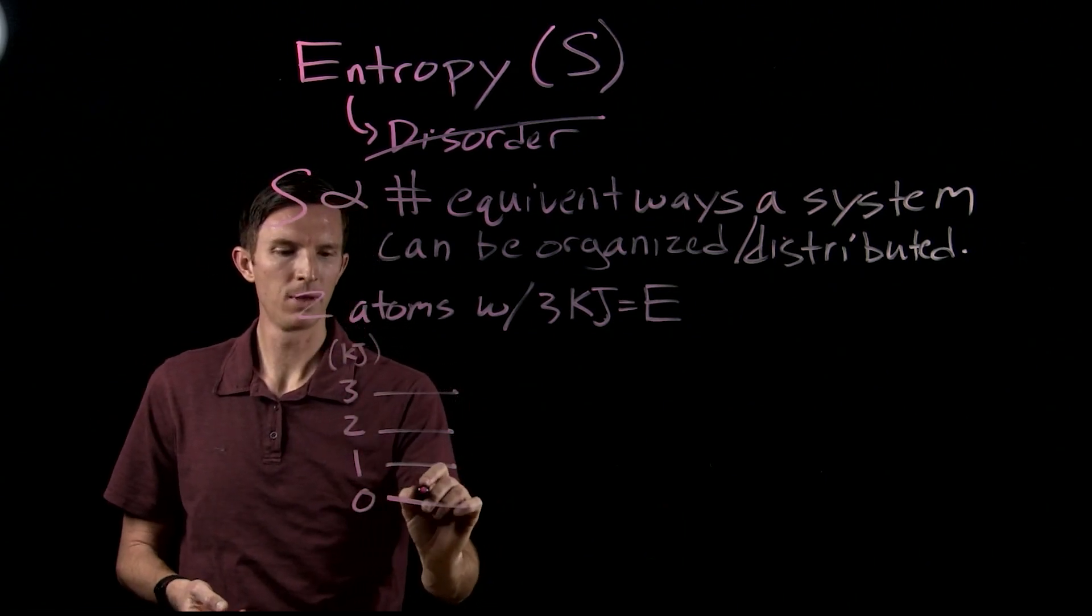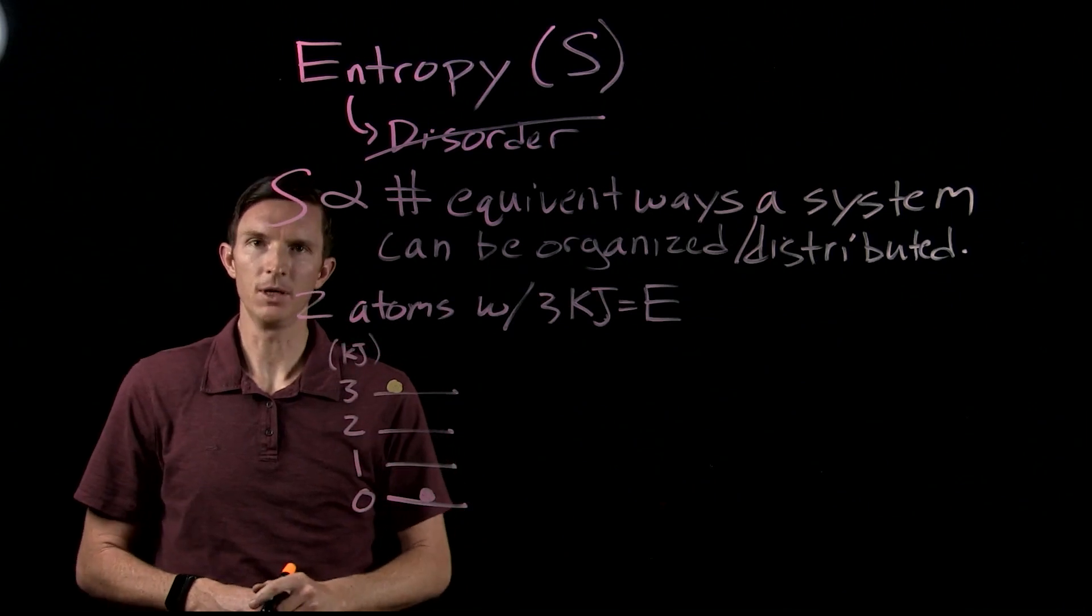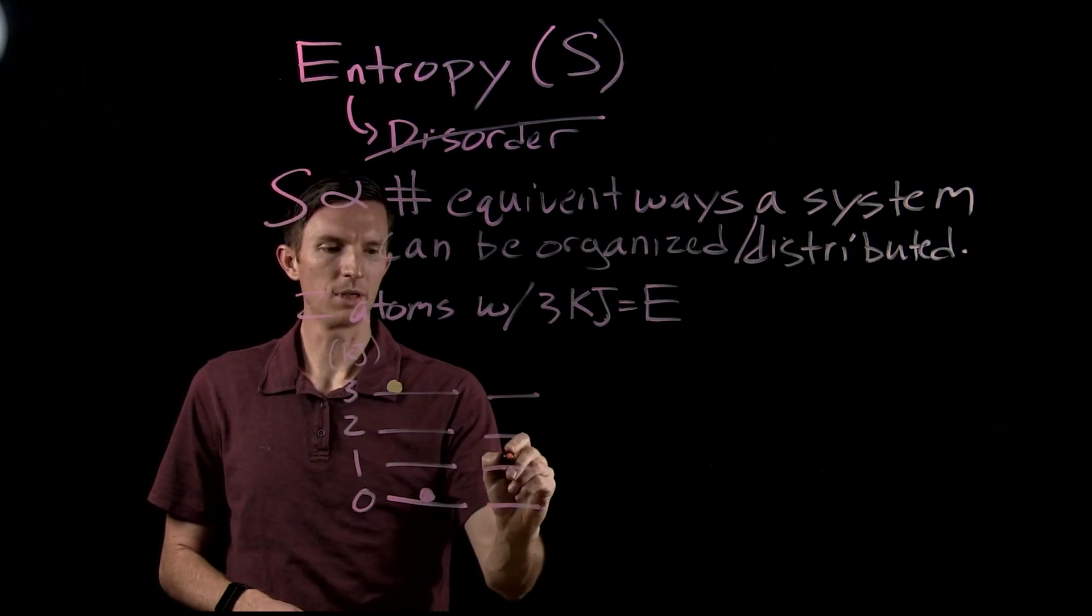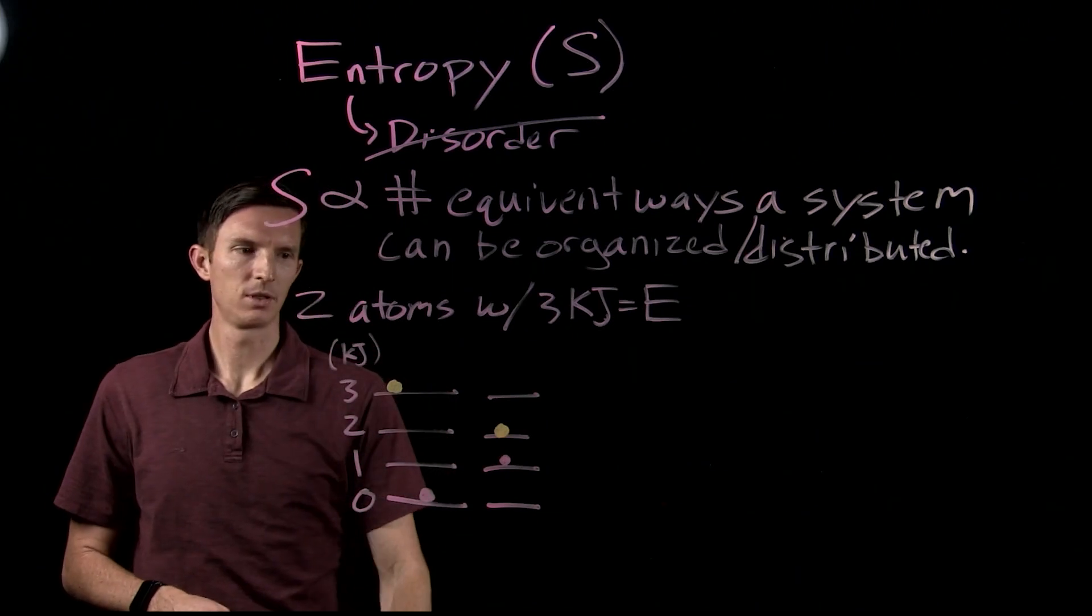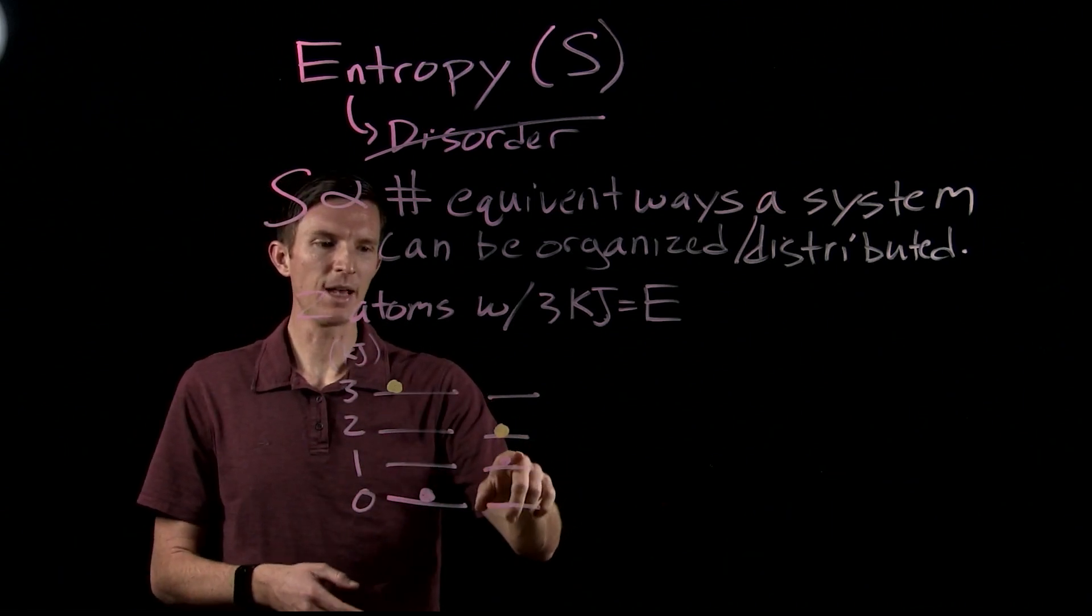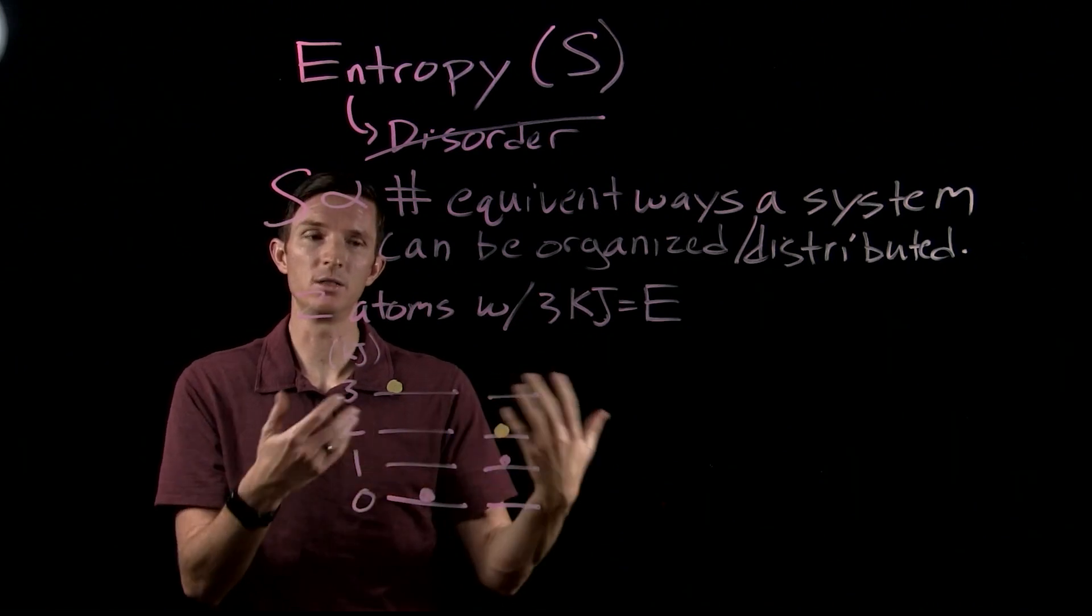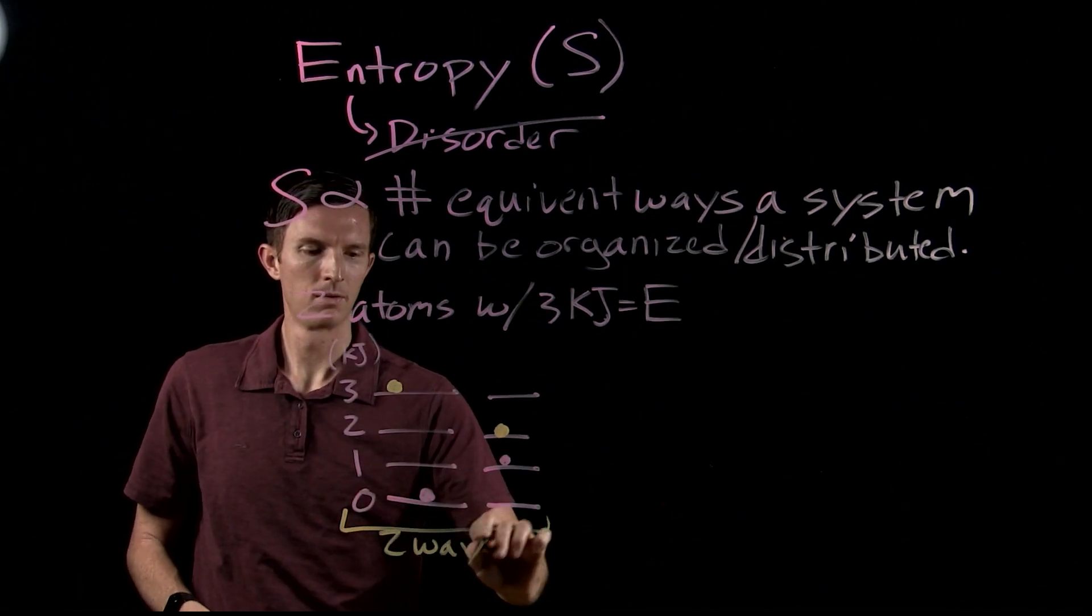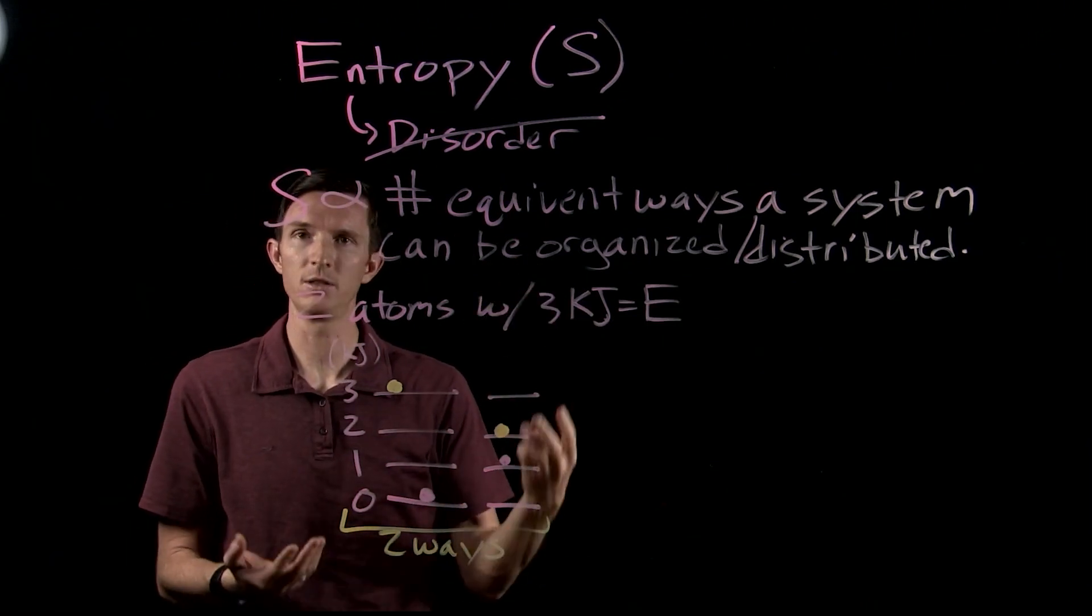We have the possibility to have one atom sit at zero kilojoules and the other at three. We can also have one at two and one at one. These are the only two ways we can distribute them. If this atom's up here and this atom's down here, it's still equivalent. We haven't changed how energy is distributed. So we have two ways to distribute energy equivalently without changing the total energy. Our total energy is still three.